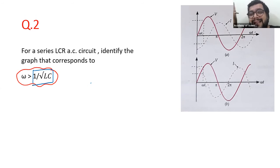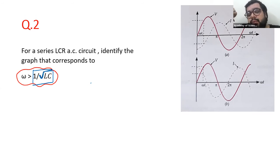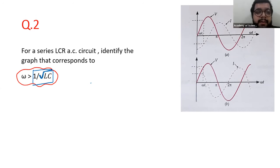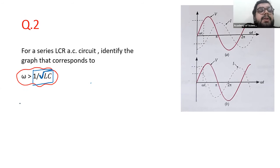What is 1/√LC? It is ωR — the resonant angular frequency. So the condition ω > 1/√LC means ω is bigger than ωR, which means the applied frequency is bigger than the resonant frequency.